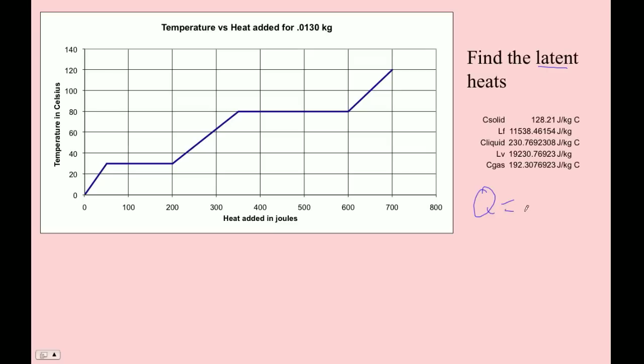Now, the formula we're going to use is Q equals ML. This is our latent heat of fusion. Here's our mass, and they tell us the mass. You can't get the mass from the graph. And we're going to read the Q off of the graph.